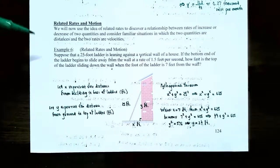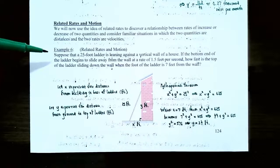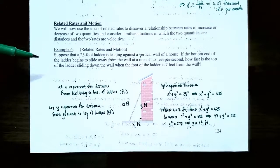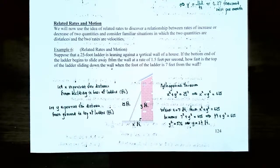Let's talk about example six: related rates and motion. Suppose that a 25-foot ladder is leaning against a vertical wall of a house. If the bottom end of the ladder begins to slide away from the wall at a rate of 1.5 feet per second, how fast is the top of the ladder sliding down the wall when the foot of the ladder is seven feet from the wall?